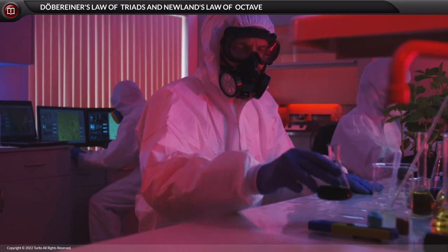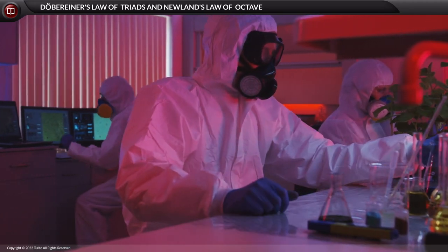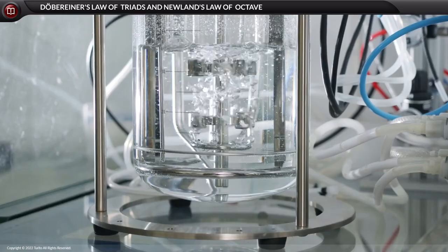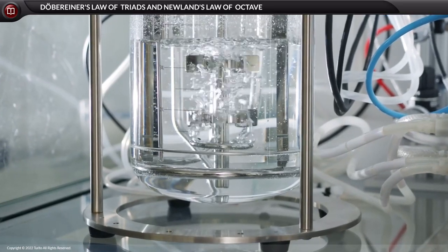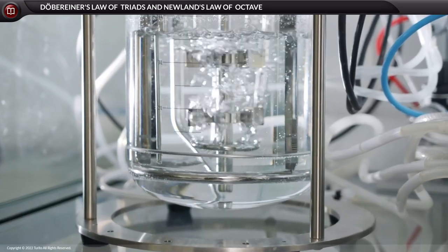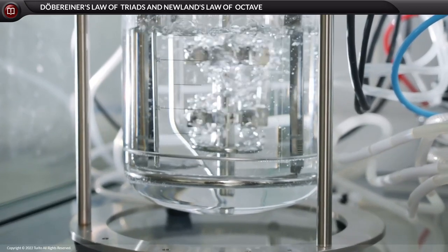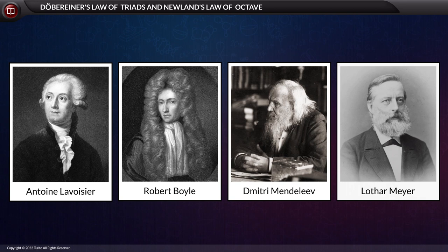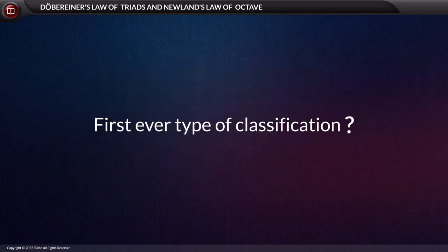Different elements must have different properties; however, some elements have similarities in physical and chemical properties. Thus, as an act of systematizing, the researchers and scientists of those days arranged the elements based on the similarity in their physical and chemical properties.